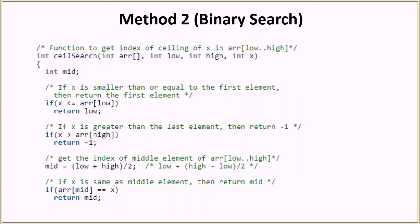Let's see how binary search will work. We have the ceiling search function with the same arguments. We do the first check: if x is less than or equal to array[low], we simply return low. After that we have another check: if x is greater than array[high] then we return -1, saying that there is no ceiling available — the array doesn't have any element which can become the ceiling. So we have covered the border cases.